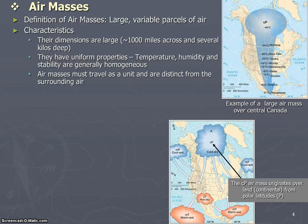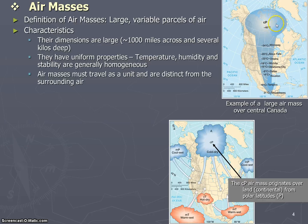They must travel as a unit, and they are distinct from the surrounding air. As an example, you see the CP air mass, which stands for Continental and Polar. This is where the air mass originates — over a continent and in a polar region.